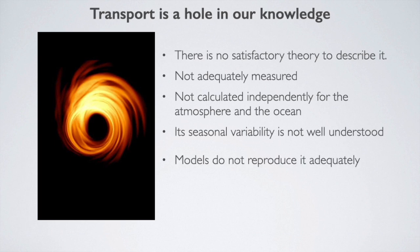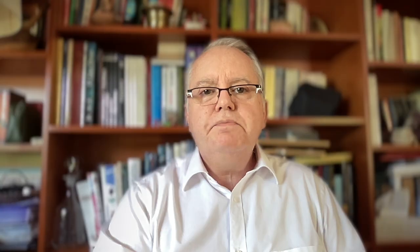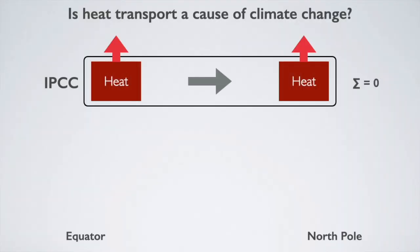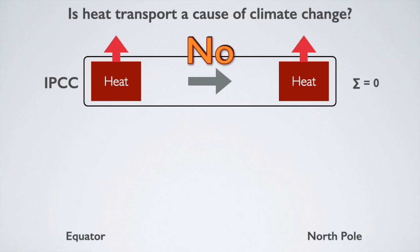Because we know almost nothing about heat transport, the models do not know it either. Although they can be made to reproduce the total annual amount transported, they are not able to do so in the same way as the climate. Despite this lack of knowledge, most scientists believe that variations in heat transport have not contributed to recent climate change. The first reason is that when heat is transported horizontally within the climate system, the amount of heat contained in the system is not changed, and that heat continues to produce the same infrared emissions to space. Therefore, heat transport cannot cause global climate change — only regional changes.